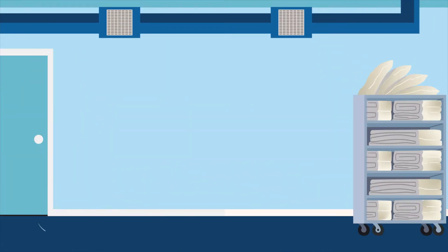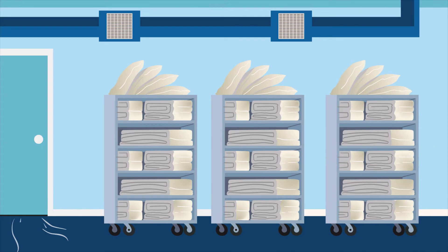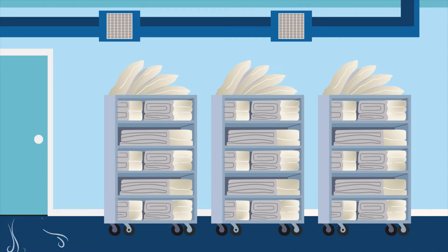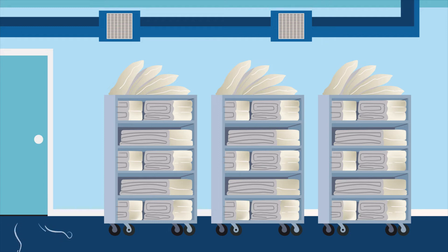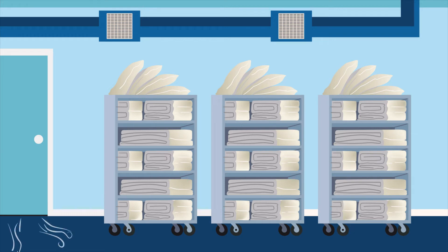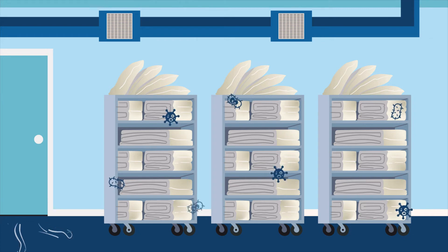Think about a soiled linen room, which is required to have negative airflow. That means that air from surrounding spaces is drawn in through the cracks under the door of the soiled linen room. This negative airflow helps to make sure that cleaner air from the surrounding spaces is always flowing into the soiled linen room where the air is dirtier.